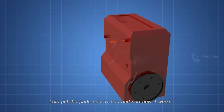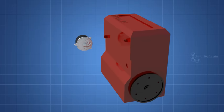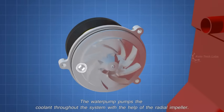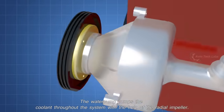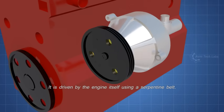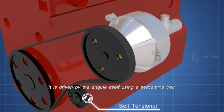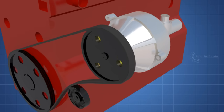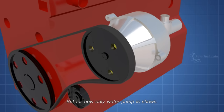Let's put the parts one by one and see how it works. The water pump pumps the coolant throughout the system with the help of the radial impeller. It is driven by the engine itself using a serpentine belt. The serpentine belt also drives the power steering pump, alternator, AC compressor. But for now only water pump is shown.